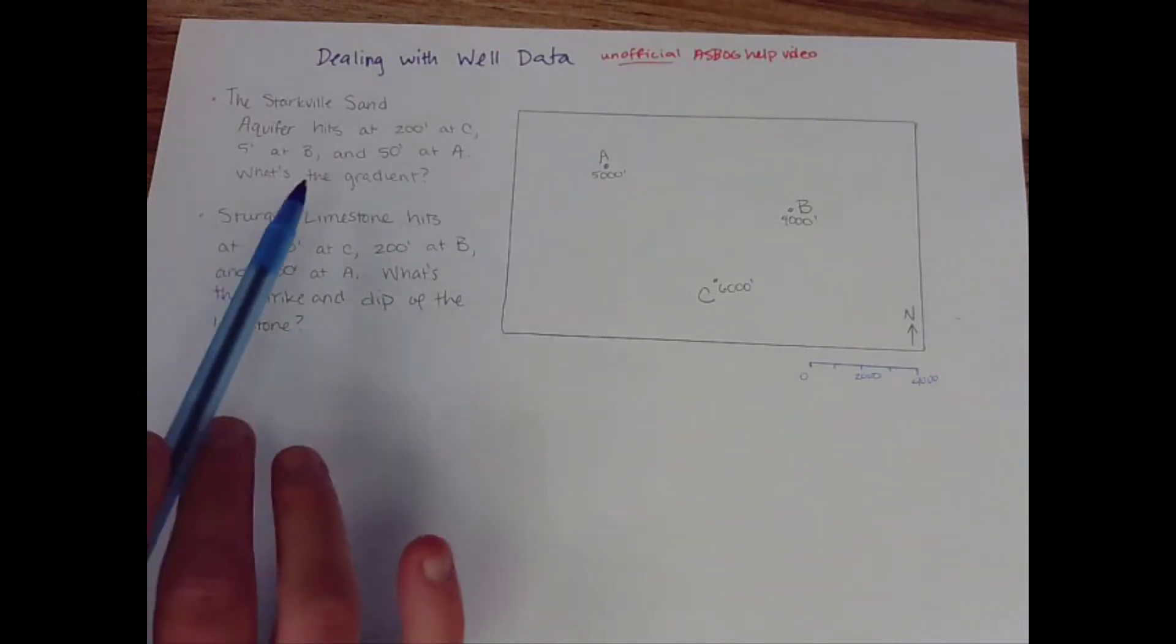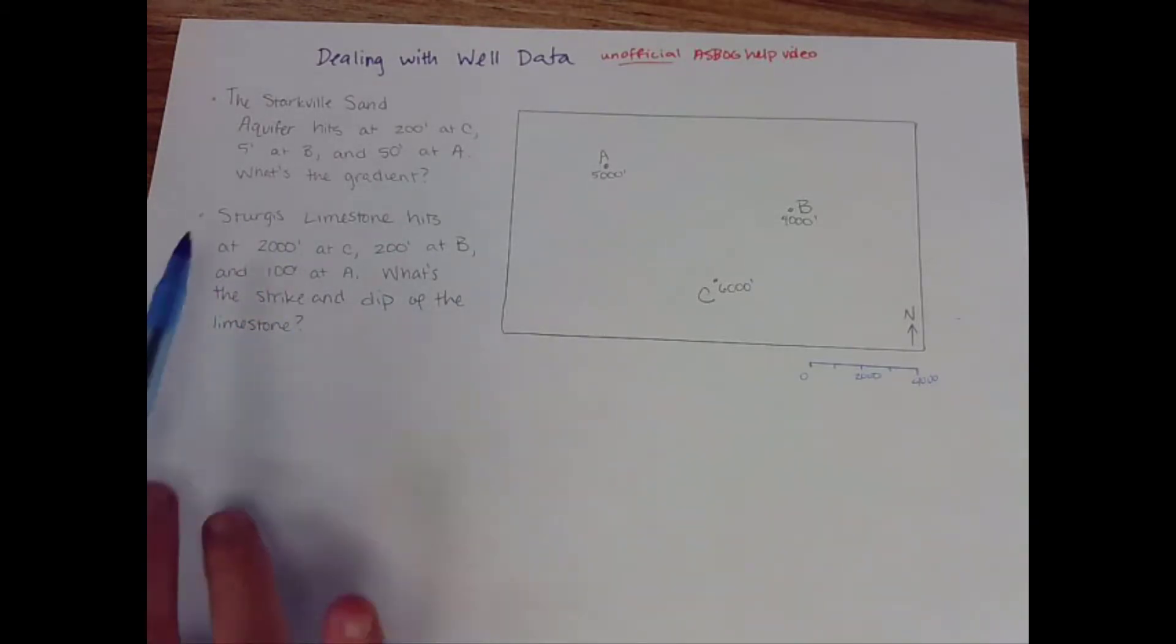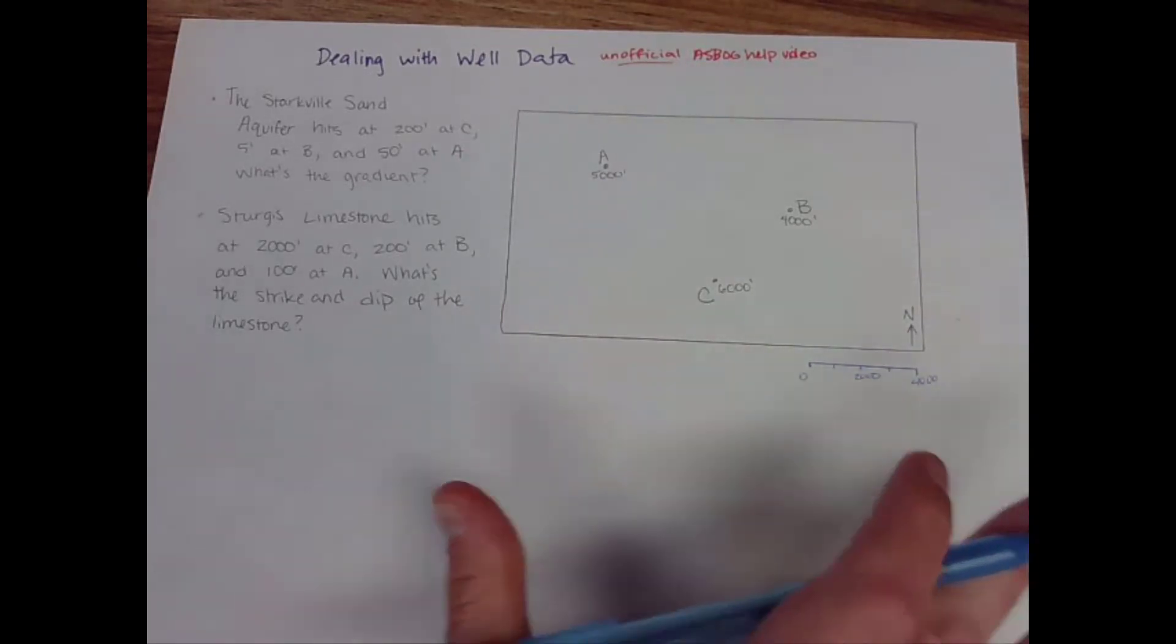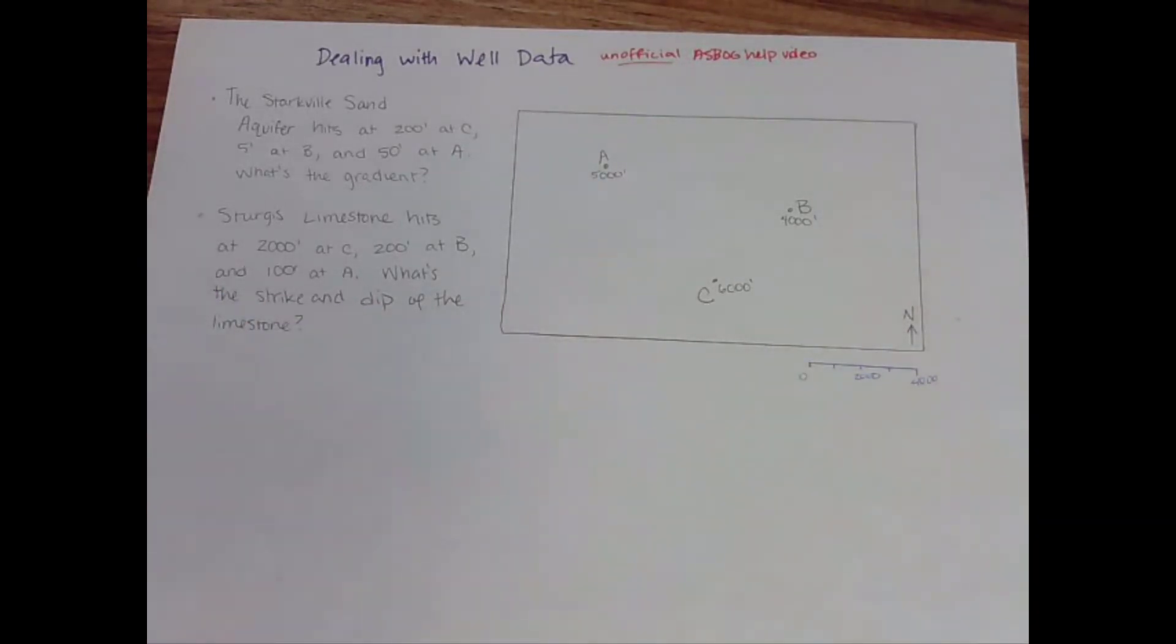So we're going to go over what you would do in this situation if you're asked for a gradient and then what you would do if you're asked to essentially do a three-point problem. So let's start with that gradient first. I'm going to do all this in blue because it's associated with water and then when we hit this next problem we'll do that in red.